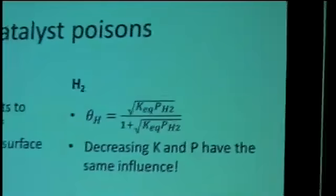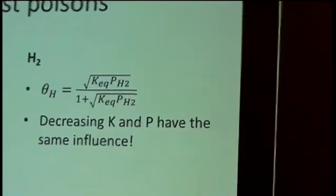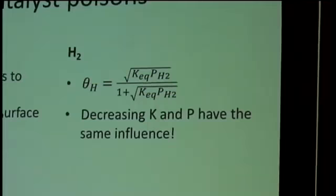Here is the most simple description of hydrogen coverage on a surface. We see that the hydrogen coverage is a function of the adsorption equilibrium constant and hydrogen partial pressure, square root of it, etc. By looking at this expression, I want to tell you mathematically that changing the equilibrium constant and changing the partial pressure gives rise to the same effect. Just keep that in mind.